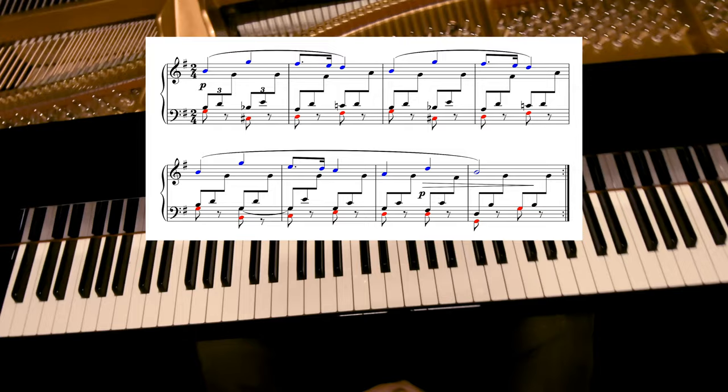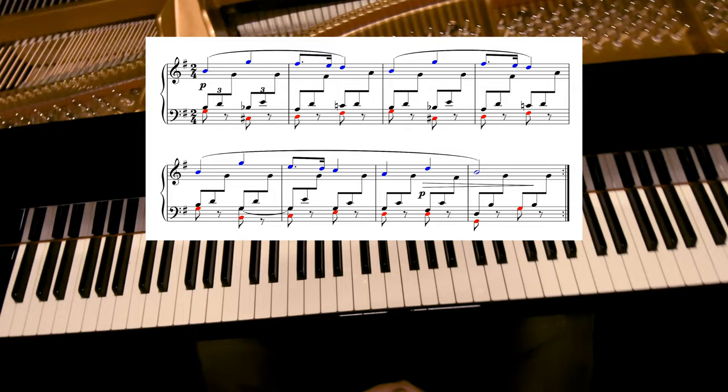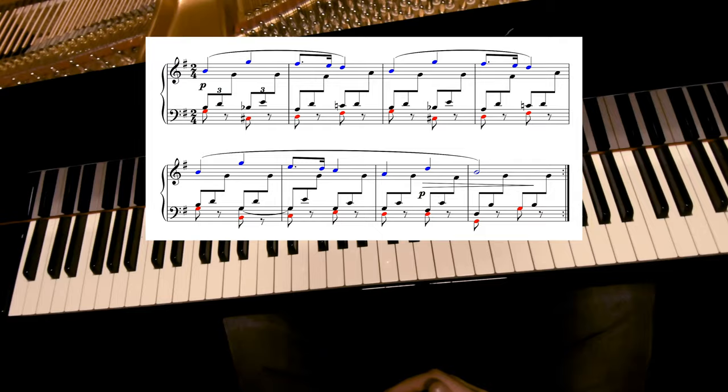Now, let's play the melody and the bass slowly at the same time. Try to play with a clear contrast between both layers. Let's, for example, imagine the top layer played by a violin and the bottom layer by a double bass.